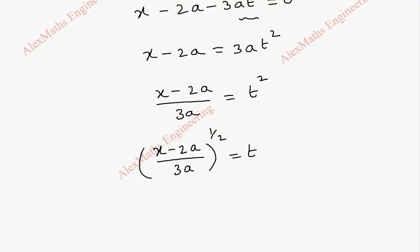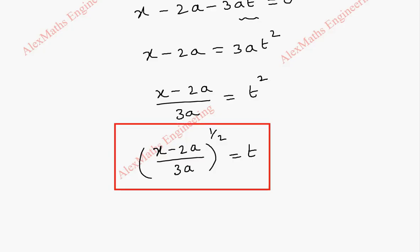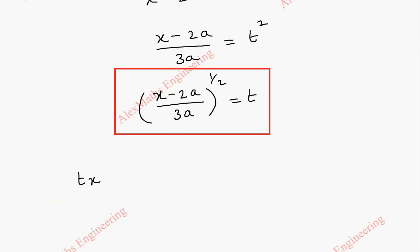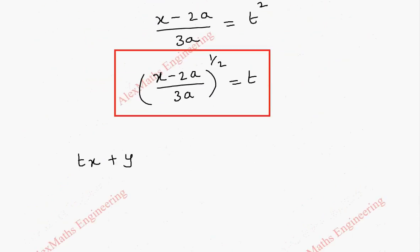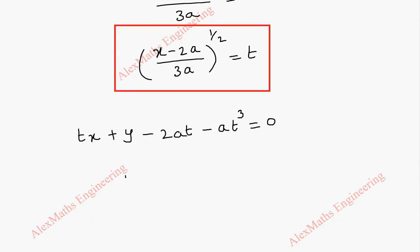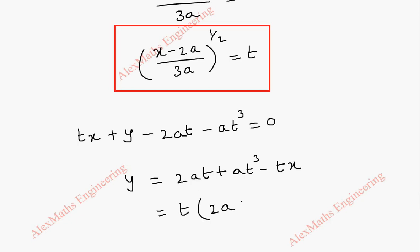We have found t, and we now substitute it back into the equation of the normal tx + y − 2at − at³ = 0 to eliminate t. Rearranging: y = 2at + at³ − tx. Taking t common on the right side: y = t(2a + at² − x).